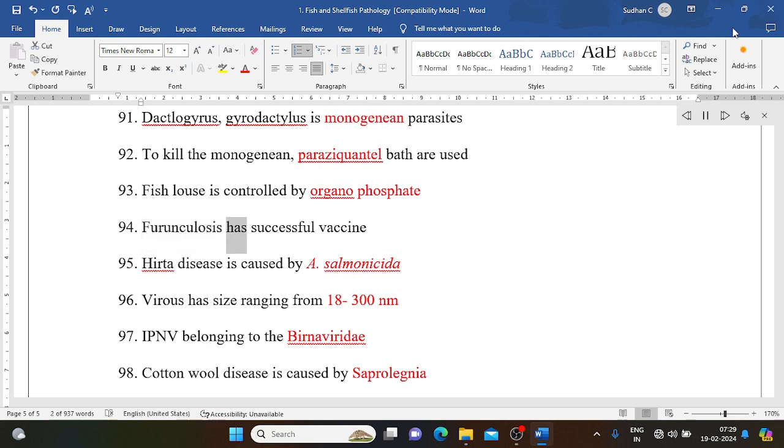Furunculosis has successful vaccine. Hitra disease is caused by Aeromonas salmonicida. Virus has size ranging from 18 to 300 nanometers. IPNV belonging to the Birnaviridae.